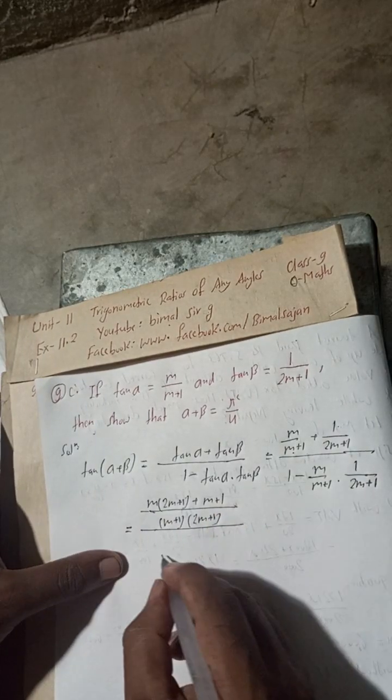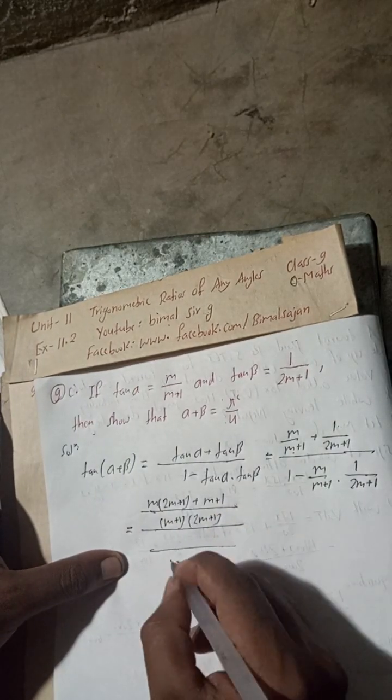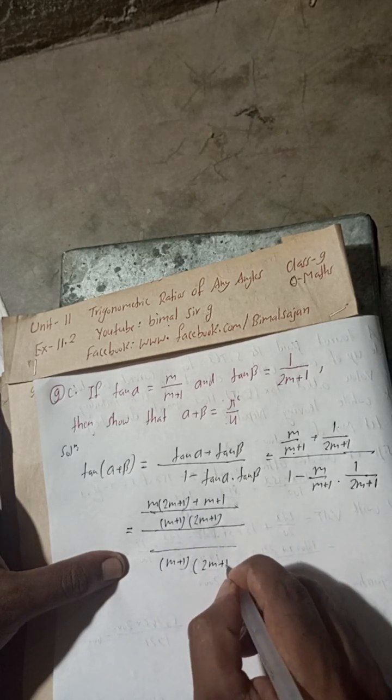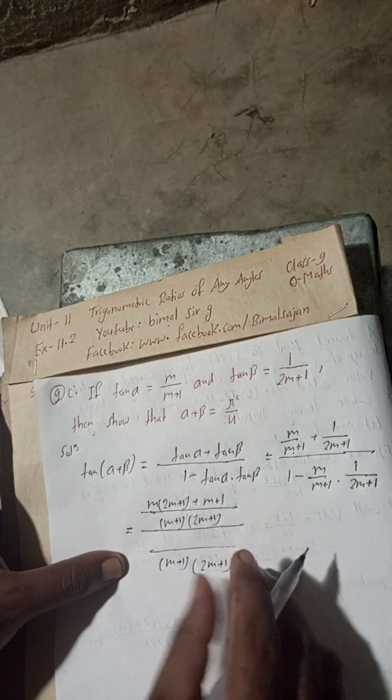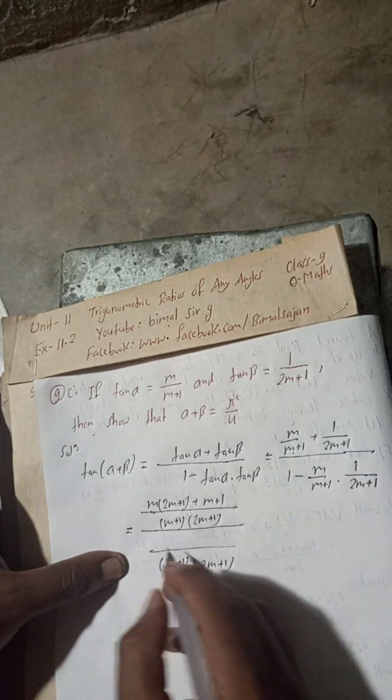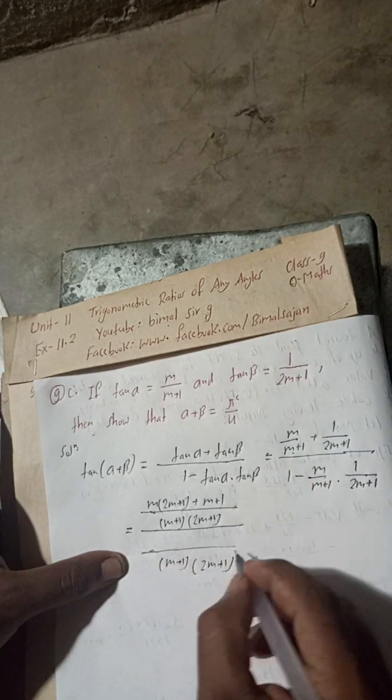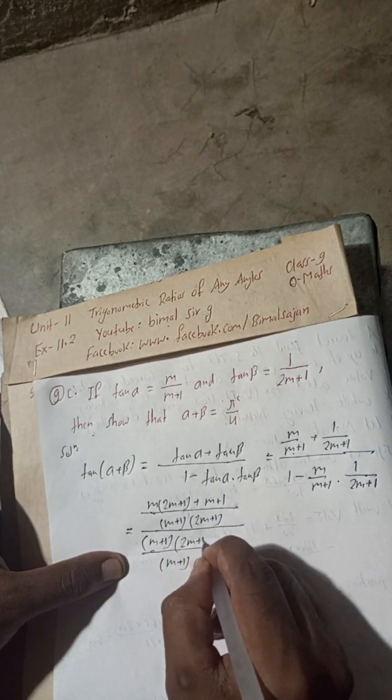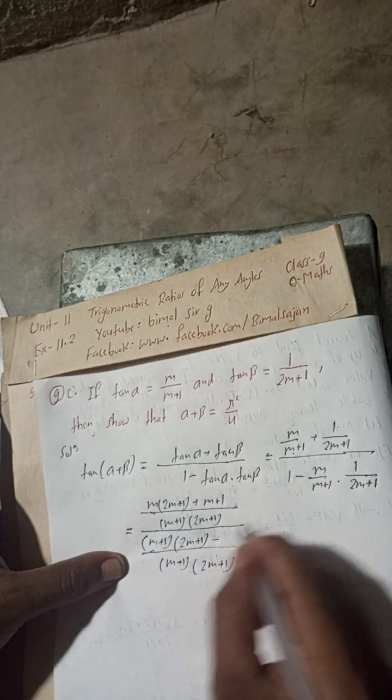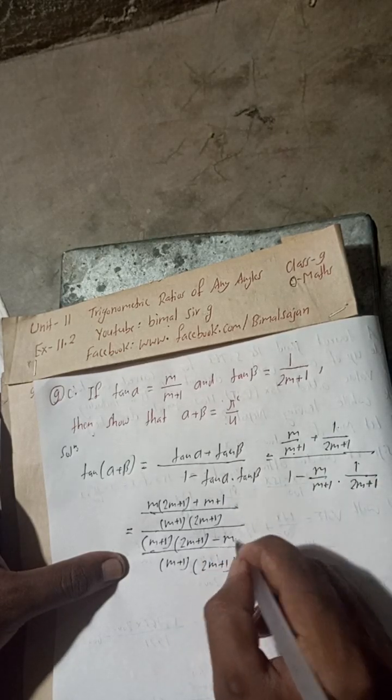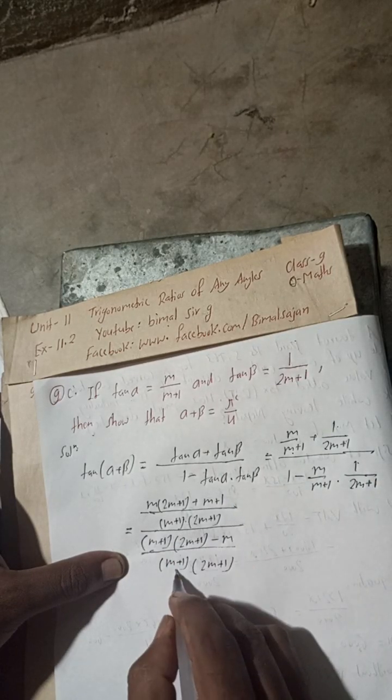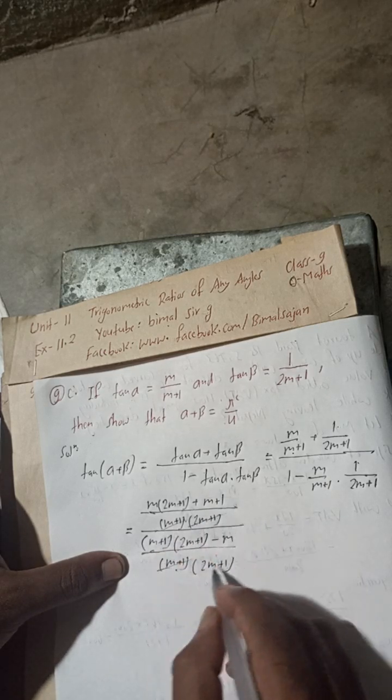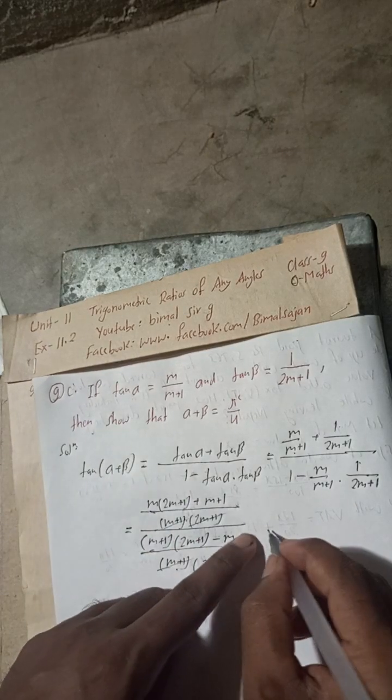If you multiply this, you will get (m+1) × (2m+1), and then minus m × 1 is m. You can see this same (m+1)(2m+1), so this cancels, this cancels. Now you can write here.